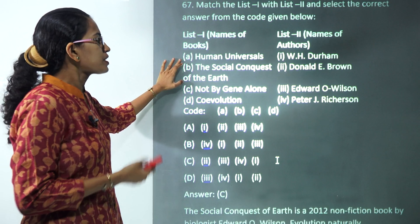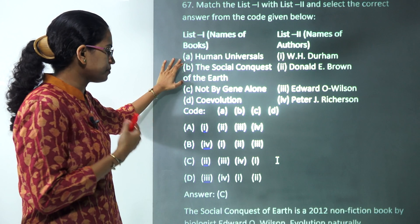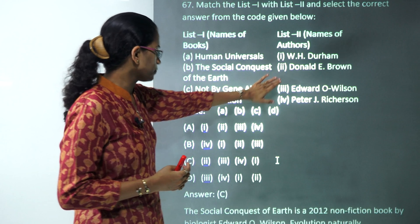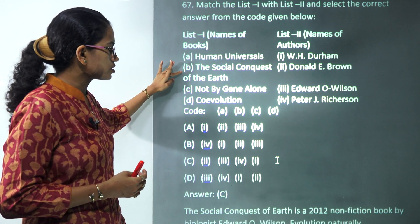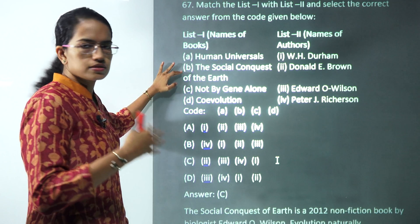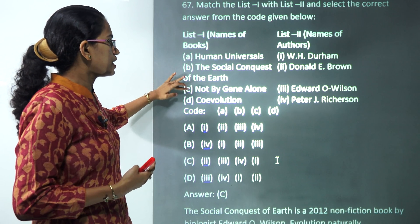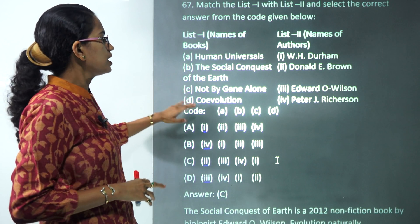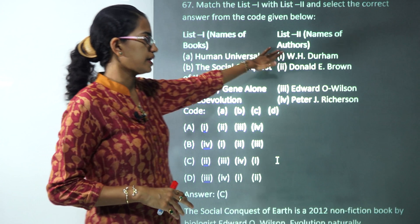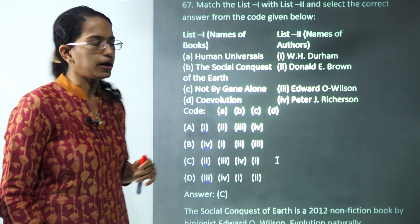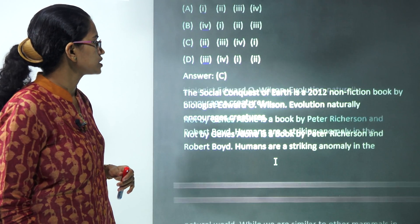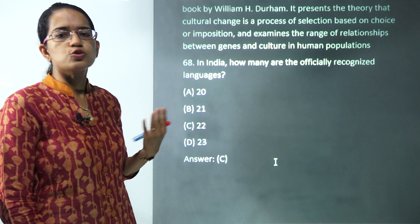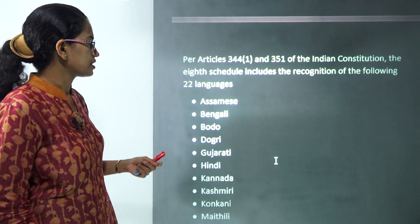The next question matches books with their authors. 'Universal' is written by Brown, 'Social Conquest of the Earth' is by Wilson — a biologist. 'Not by Gene Alone' is by Richardson — a very important work. 'Co-evolution: The Genetics' is by Durham. These are the correct matches.